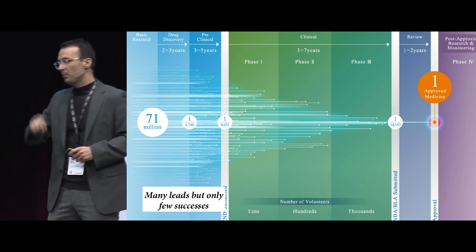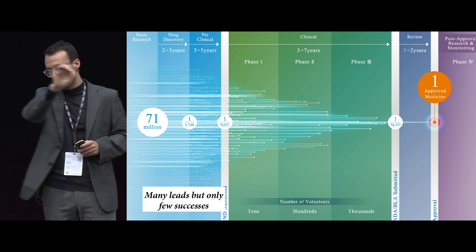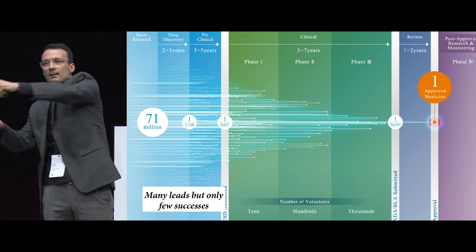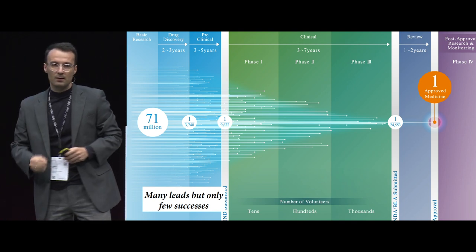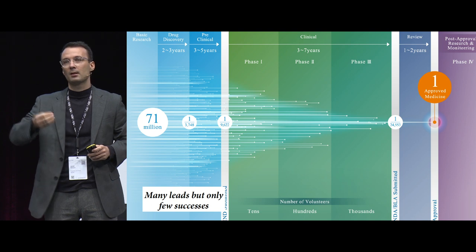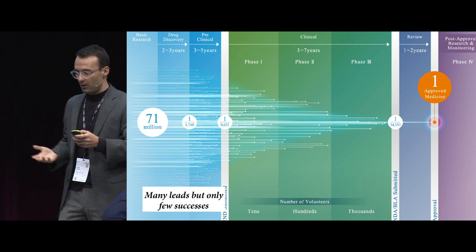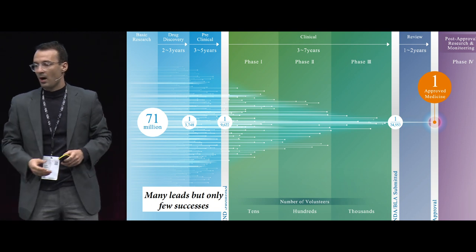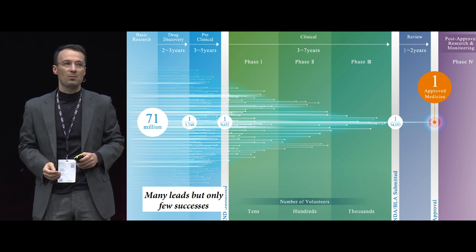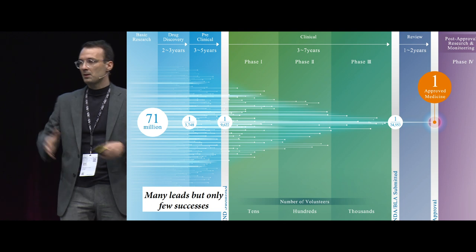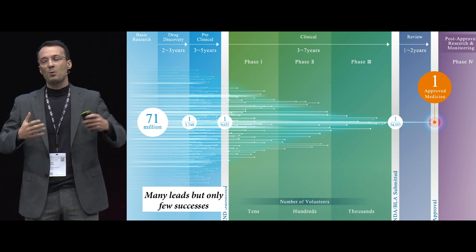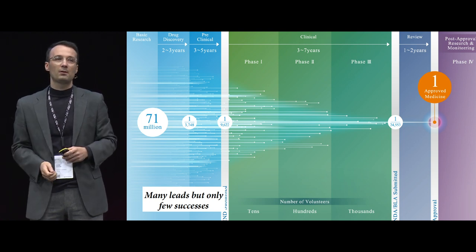If we focus on the white lines going from left to right, we see a pattern where we have a lot of compounds and they become fewer and fewer. These are the compounds or leads you try to assess for curing a certain disease. There are a lot of them with very few successes, which makes the process very expensive and time-consuming. My colleagues and I are mostly in this blue drug discovery area, trying to optimize it so we get to the end result in significantly less time.